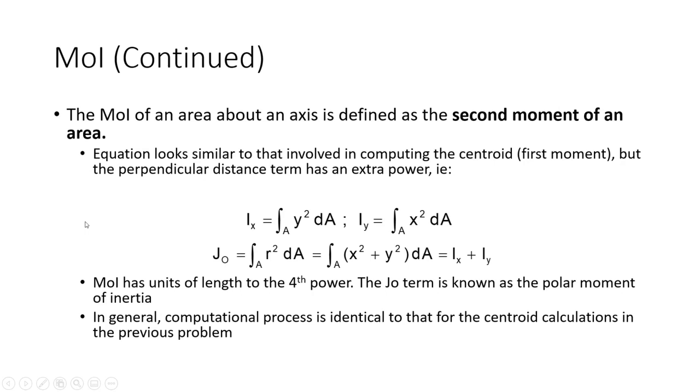Here are the formulas. As we guess, they look a lot like a centroid computation. Only these linear terms, Y and X, are now raised to the second power. Because of that, it's not surprising that this will take on units of length to the fourth power. Area is length to the second power. Y squared and X squared are length to the second power. When you multiply them, you'll get length to the fourth power.